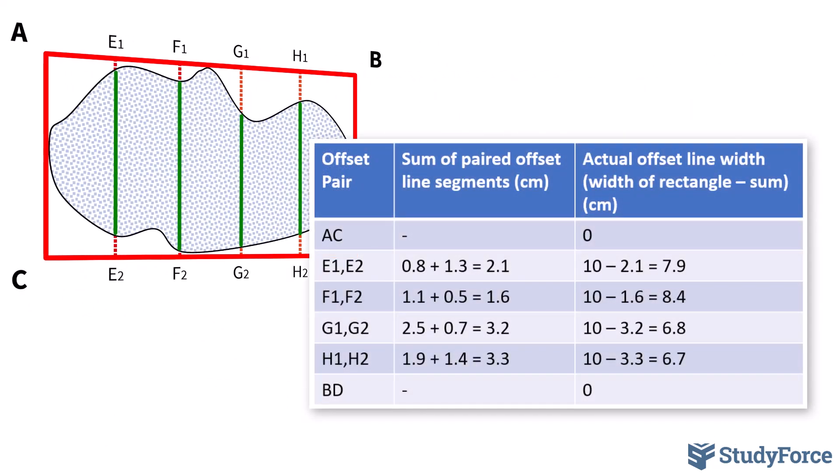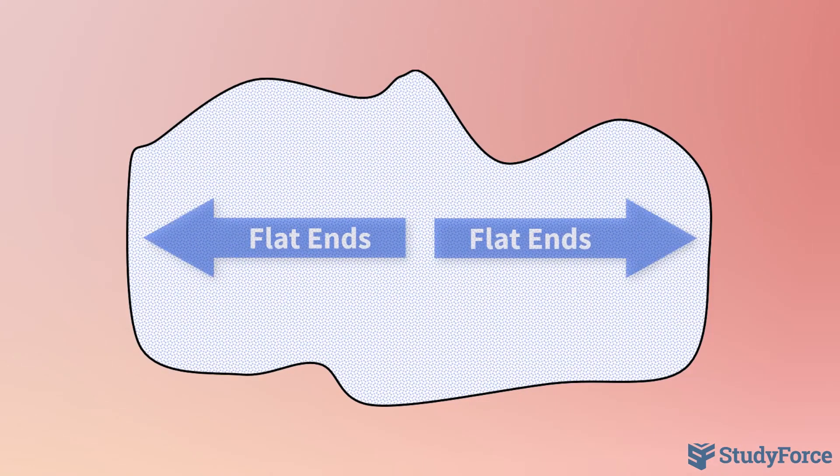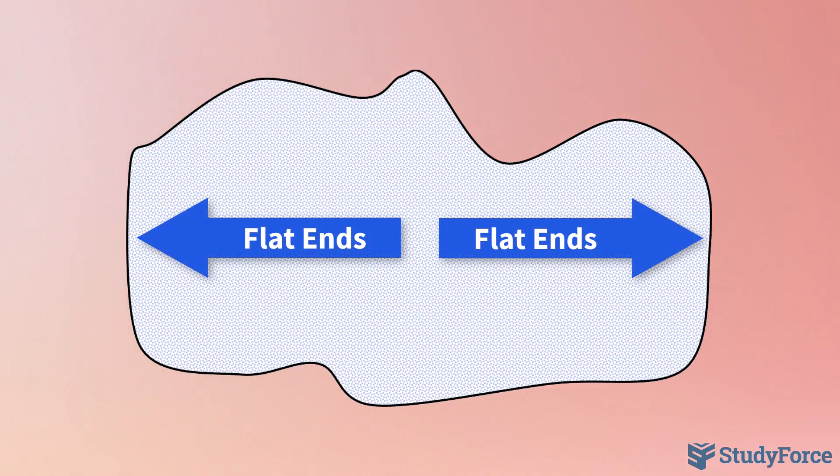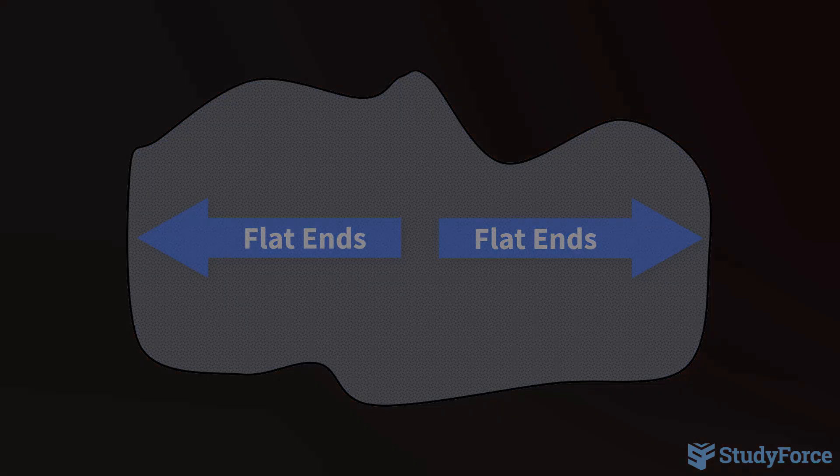Here's a summary of all the measurements, including those taken from offset G and H. Note that the offset line for AC and BD, which represent the first and the last observations, both have a length of 0 centimeters. Now, keep in mind that this isn't always the case. Here is an example of an irregular shape where the first and the last observations would be something other than 0.